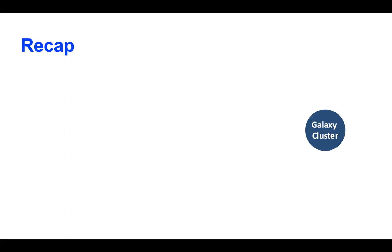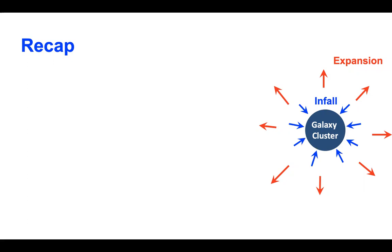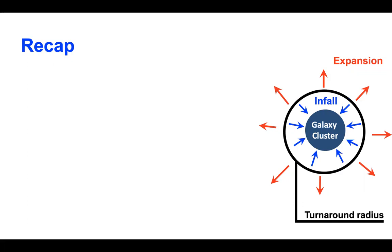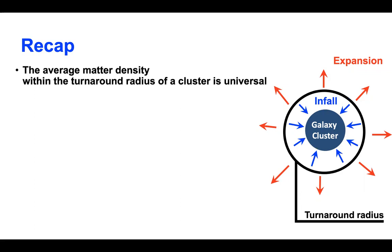Let's assume we have a galaxy cluster, and around that galaxy cluster we have the expanding universe. At some point, you still have matter infalling onto that galaxy cluster — a big structure still accreting matter. There will be a boundary between infall and expansion, and that's the turnaround radius. This is where I will focus today. The average matter density within the turnaround radius of a cluster is universal — it is the same for all clusters at a given redshift and for a given cosmology.